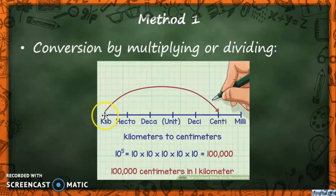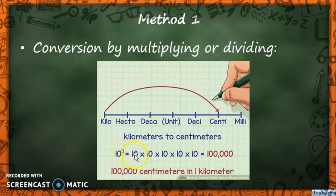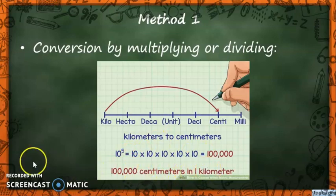How many times do we multiply? Counting the steps: 1, 2, 3, 4, 5. We multiply 10 by itself 5 times, giving us 10 to the fifth power — or simply, 10 × 10 × 10 × 10 × 10 — which equals 100,000. So there are 100,000 centimeters in 1 kilometer.